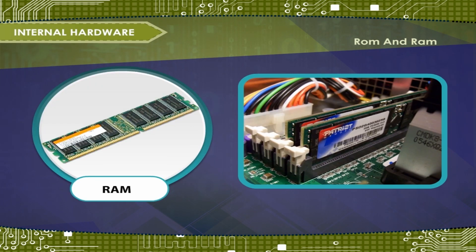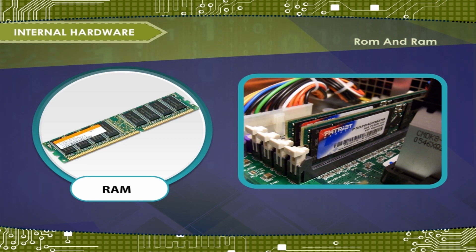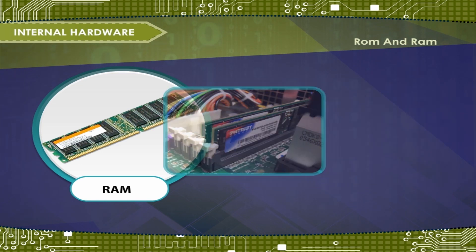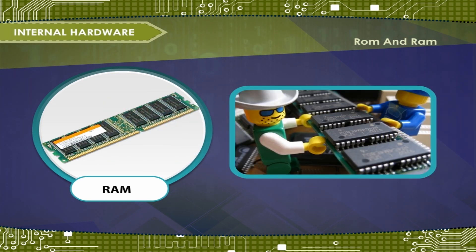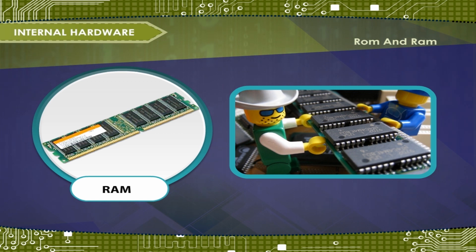RAM — Random Access Memory. It is the temporary memory. The data or information stored in it gets erased when the computer is switched off. The data and instructions required by the computer for its working are transferred from the secondary storage devices to the RAM.